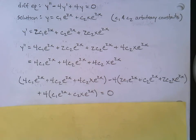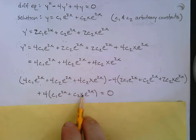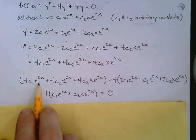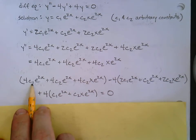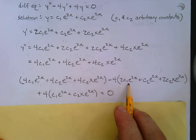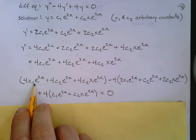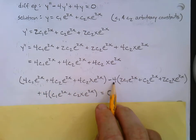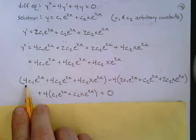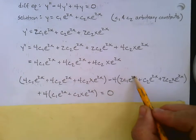Let's check whether the left side really works out to zero. Let's look at the c1 e to the 2x terms: I have four of them from y double prime, but then I'm subtracting eight from the y prime term, and then adding four back from the y term. Four minus eight plus four — yes, all of those cancel out.